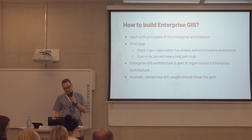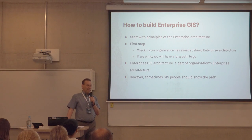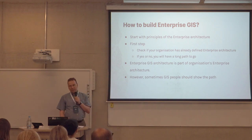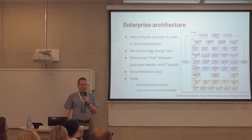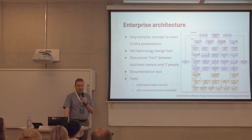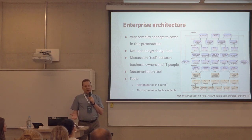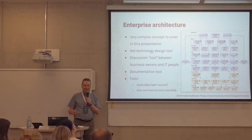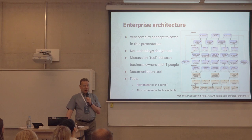GIS people should show the path. It's not the first time I've seen that some kind of new ICT comes to organizations and the GIS people are the first to do it. Enterprise architecture is a very complex concept to cover. My feeling is that it's not really a technology tool — it's like a discussion between business owners and IT people. There is Archimate open-source software that you can use to collect and store that information. There's also a good book you can read to understand how to do it.